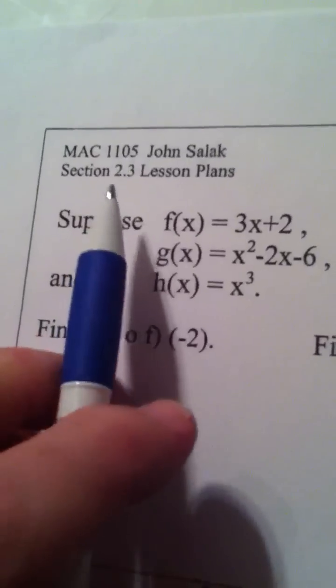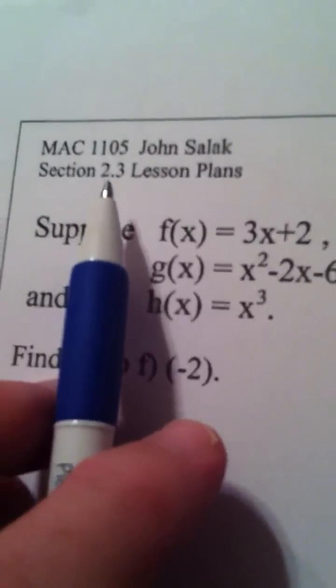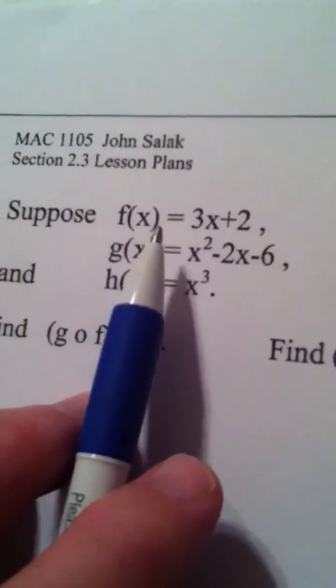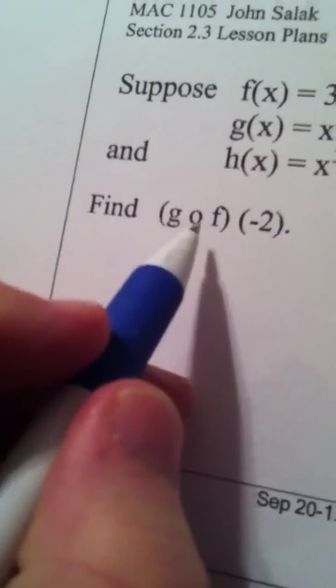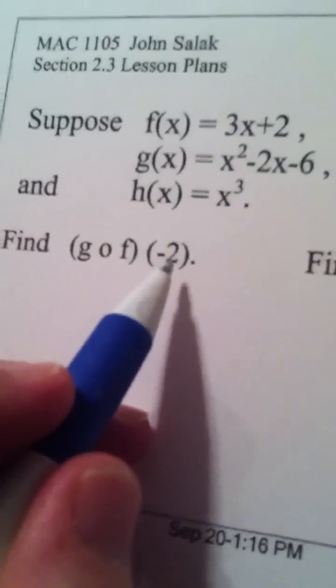Okay, ladies and gentlemen, let's start looking here at section 2.3. We have three functions we're given, and the first set of directions asks us to find g composed with f of negative 2.